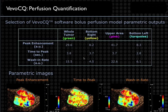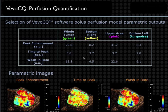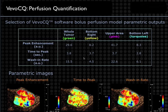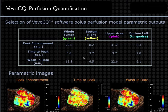The software is then able to output not just numbers associated with those curves, but also parametric images of things like peak enhancement, which has to do with relative blood volume, and then time to peak and wash-in rate, which have to do with actual blood flow. This is the kind of quantification and in-depth analysis that can be done with perfusion quantification using the contrast agent.